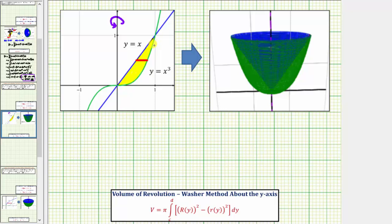From the graph, the two functions intersect at the origin, which is the point (0, 0), as well as the point (1, 1). The problem gave us the closed interval for x from zero to one, which means the interval for y would be the same — from zero to one — and that's important because we are integrating with respect to y.